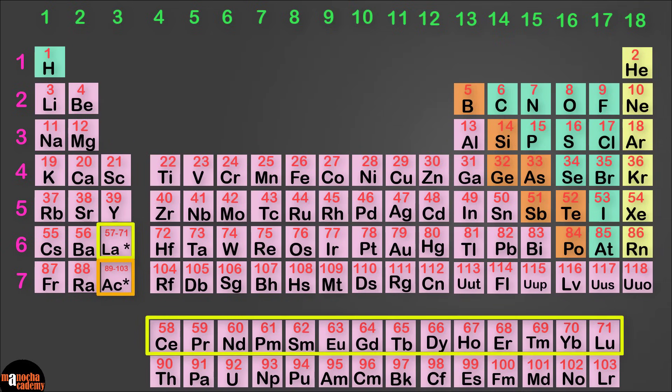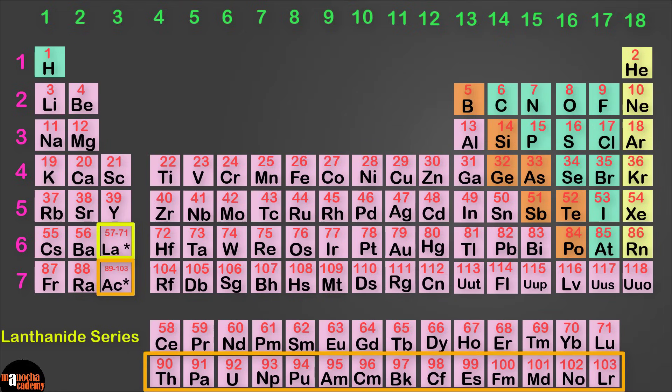The elements 57 to 71 are called the lanthanide series because they start with the element lanthanum. These elements are rare earth elements. And elements from 89 to 103 are called the actinide series because they start with the element actinium. These are radioactive elements.